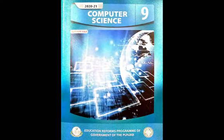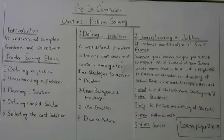This is the Punjab textbook of computer science for class ninth. It has five units. In class pre-9th, you will study first two units. Unit number one, problem solving. Unit number two, binary system.